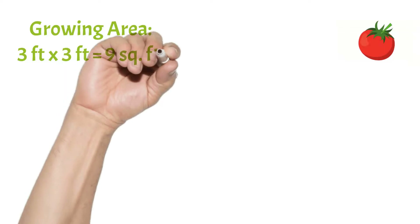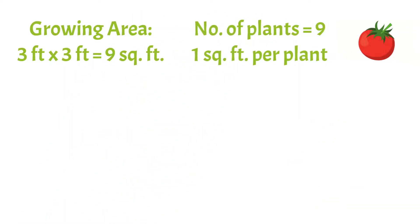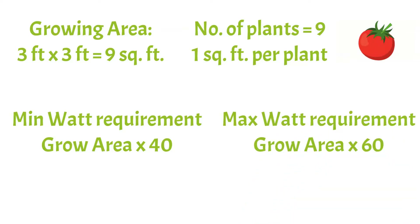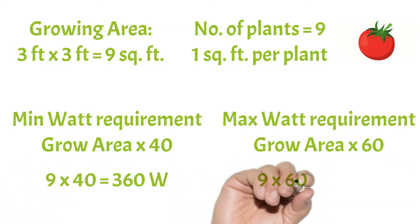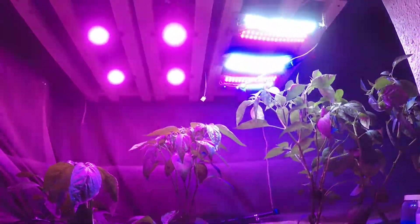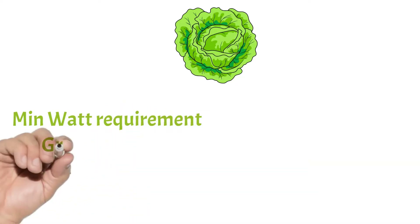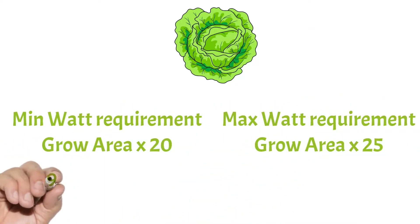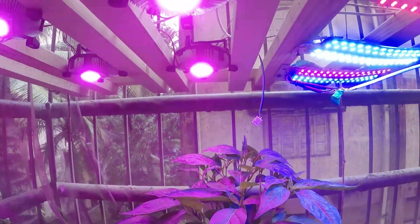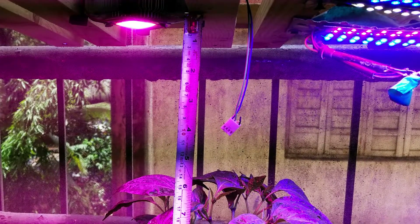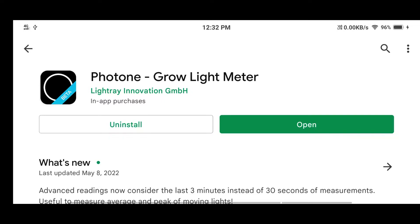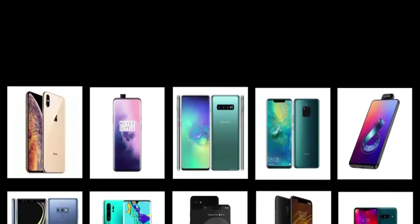For example, with a 3x3 growing area (9 square feet), using 40 watts per square foot gives 360 watts, and using 60 watts gives 540 watts — so you'd choose around 500 watts for flowering plants. For veggies, 9 x 20 or 9 x 25 gives 180 to 225 watts. If using minimum wattage, keep the distance between plants and lights to a minimum but not less than 6 inches. You can also use the Photon app to check PPFD readings, though accuracy varies by device.